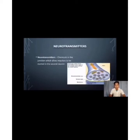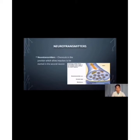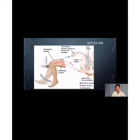Neurotransmitters are chemicals at the junction which allow impulses to be started in the second neuron.